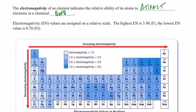We're back and continuing our discussion of periodic properties. Today we're going to talk about the periodic property of electronegativity, something we defined at the end of the last video. This concept becomes very important in our next chapter when we start talking about chemical bonding. The definition of electronegativity is the ability of an atom to attract electrons in a chemical bond.